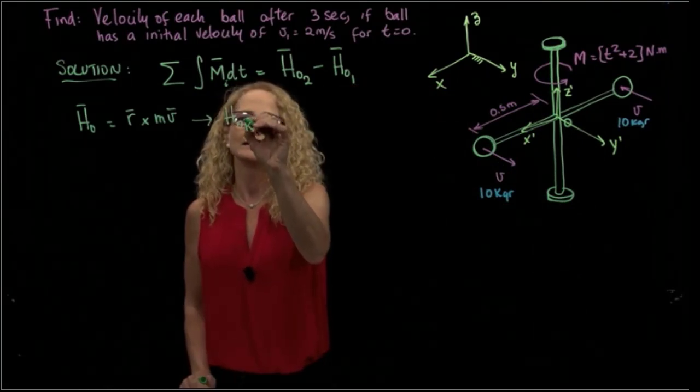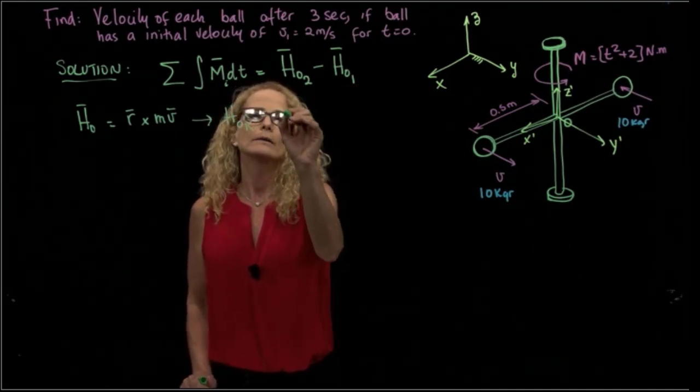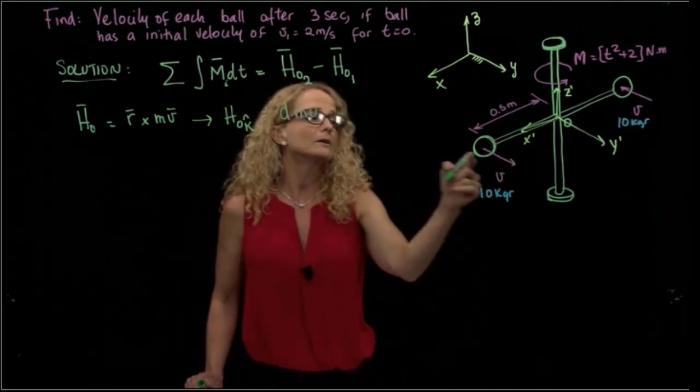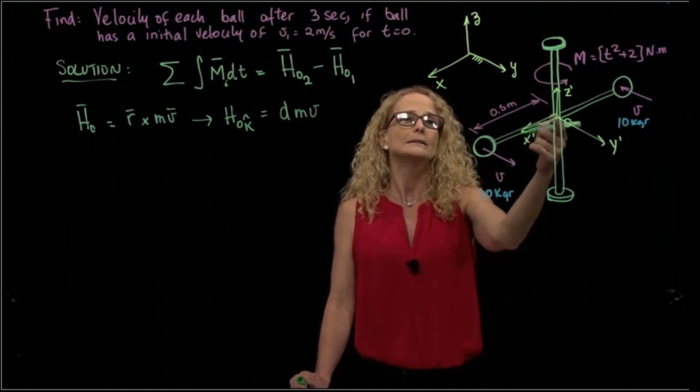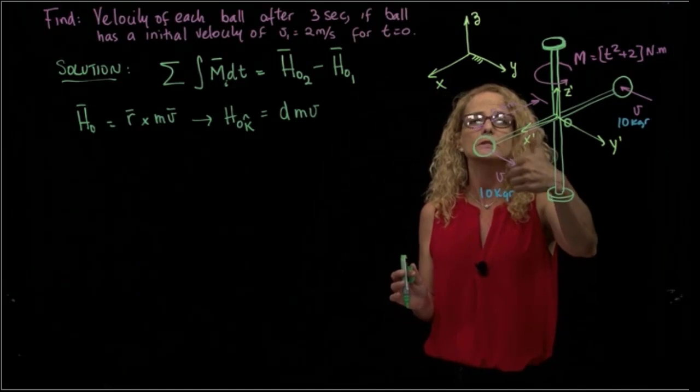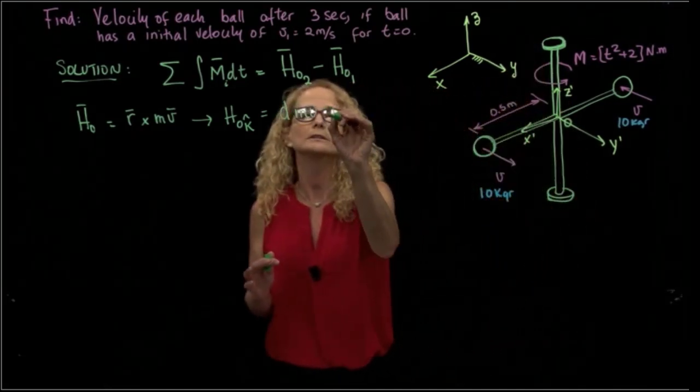Mk equals the distance times mass times velocity, because the velocity is in y direction and the distance is in x direction. So when I take that moment of the distance and the velocity, it gives me the k direction. So this is a scalar equation.